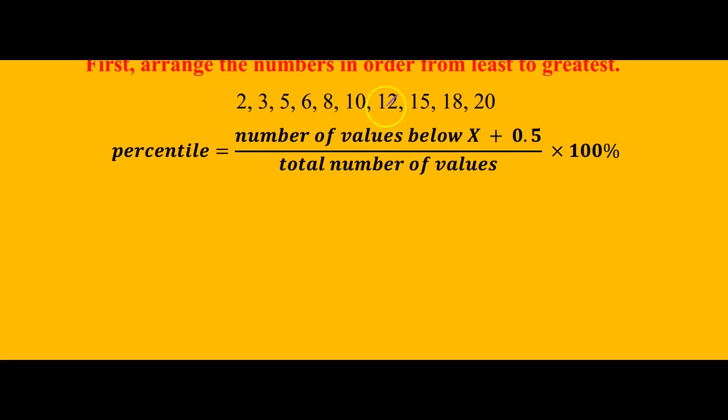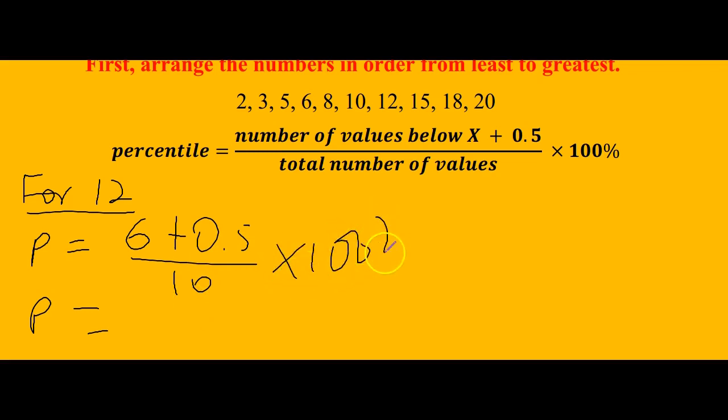Now we are looking for the score of 12. After we arrange, the score of 12 is right here. How many numbers are below 12? One, two, three, four, five, six. So the percentile is going to be: there are six values below 12, so we add 0.5 to it and then divide by the total number of values, which is 10. That will be 6.5 divided by 10, and then we multiply by 100 percent, which gives us 65 percent. So it means that the person who scored 12 did better than 65 percent of the class.